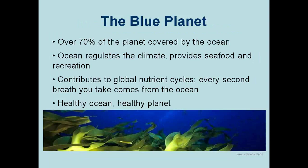The blue planet: over 70% of the planet is covered by the ocean. The ocean is the Earth's life support system — it regulates temperature, climate, and weather, provides seafood and recreational opportunities. The living ocean governs planetary chemistry, generates most of the oxygen in the sea and atmosphere, and drives the water, carbon, and nitrogen cycles. Every second breath you take comes from the ocean. We need a healthy ocean for a healthy planet.